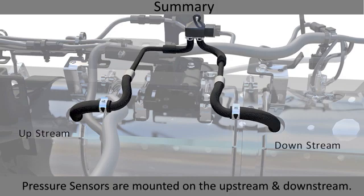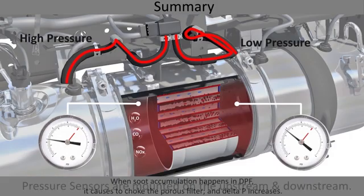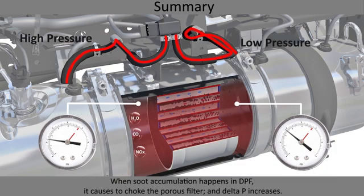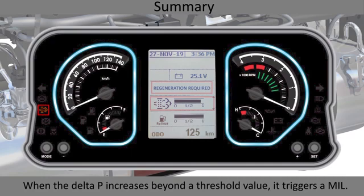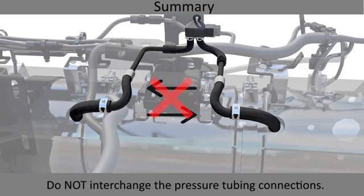Pressure sensors are mounted on the upstream and downstream. When soot accumulation happens in the DPF, it causes the porous filter to choke and delta P increases. When the delta P increases beyond a threshold value, it triggers a MIL. Do not interchange the pressure tubing connections.